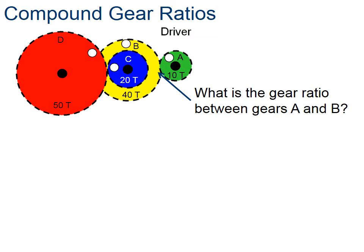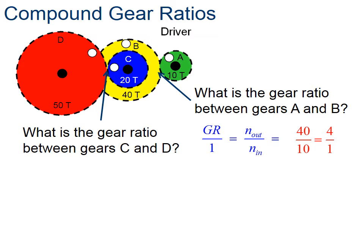So let's take a look at our compound gear ratios here, because it's going to be a different calculation. Here we're going to have to multiply. First let's take a look at the gear ratio between A and B. We're given the number of teeth. A has 10 teeth—that's what 10T stands for there. And B has 40 teeth. So we come up with a gear ratio between A and B of 4.